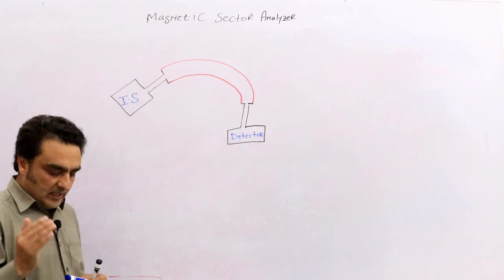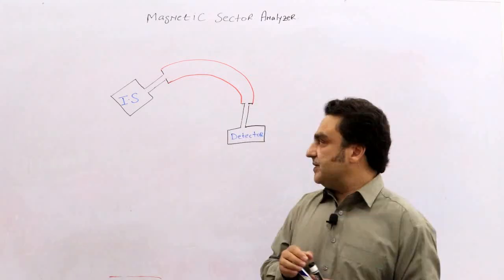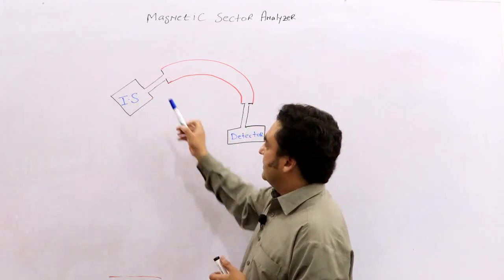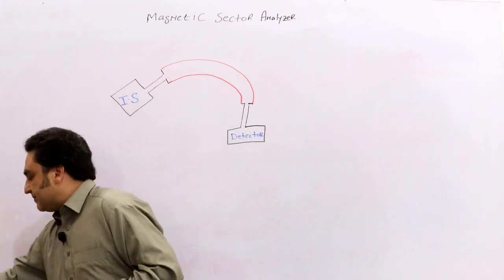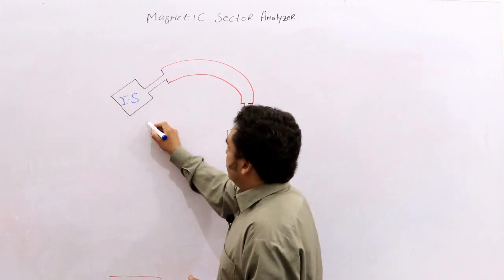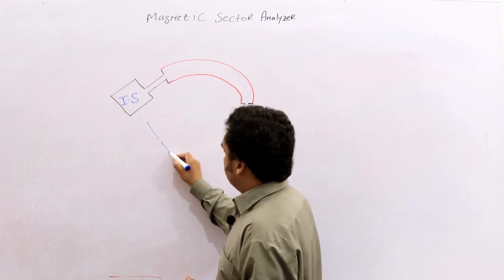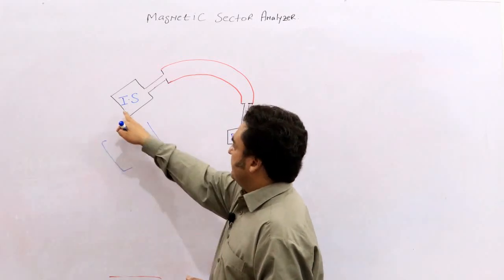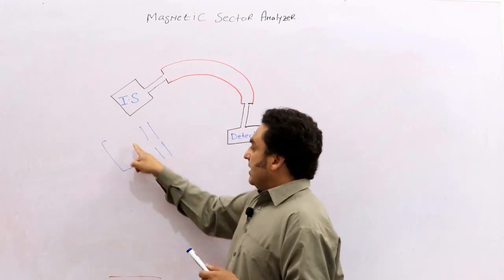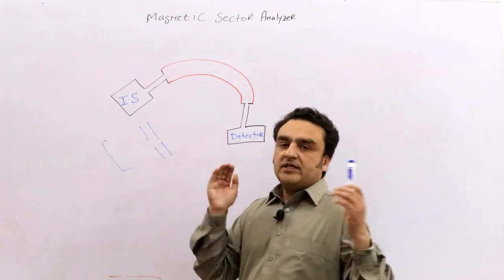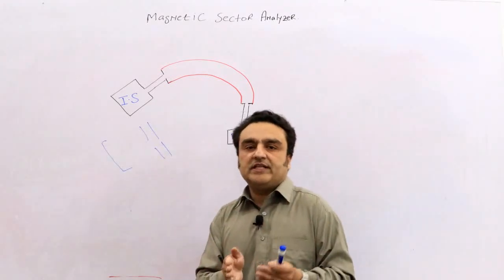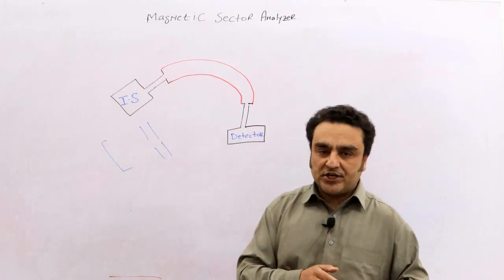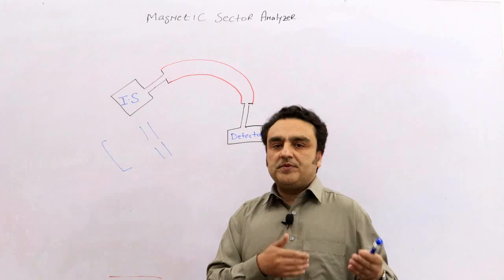Before going to the analyzer, as you know, inside the ionization source there is an accelerating propeller plate. When an electron impacts or ionizes a molecule or atom, it becomes a positive charged radical. This is from the previous section.